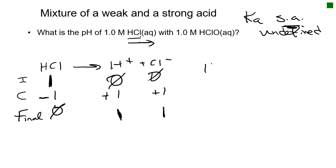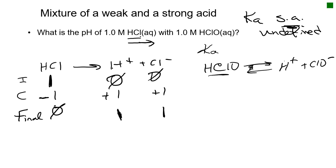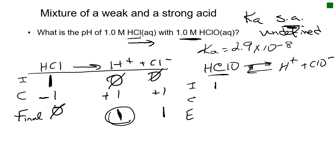Step two considers what happens when we add HClO. HClO ionizes into H⁺ plus ClO⁻. We know this is a weak acid because we memorized the strong ones and everything else is weak. We look up Ka for hypochlorous acid and find it's 2.9 × 10⁻⁸. We set up an ICE chart starting with 1M HClO. The initial H⁺ concentration is not zero — it's 1M from the strong acid, which shifts the equilibrium back via Le Chatelier's principle.